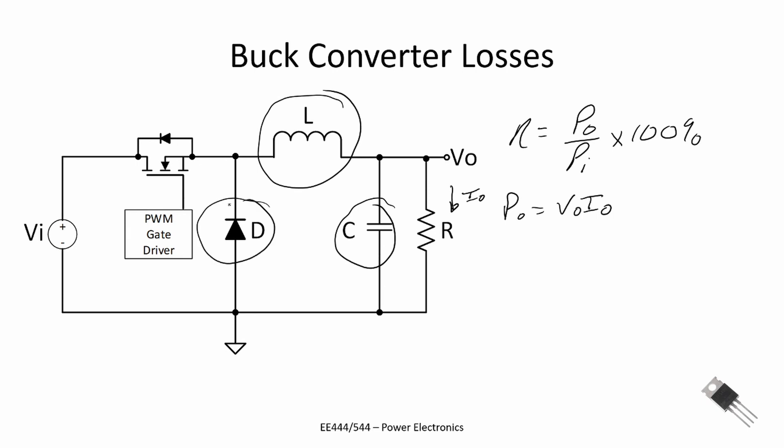During the flyback period, or the time in which the MOSFET is open, we'll have conduction loss through the diode, which will be the average current flowing through the diode times its forward bias voltage. And finally, we'll have loss in the MOSFET. And the loss in the MOSFET has two components.